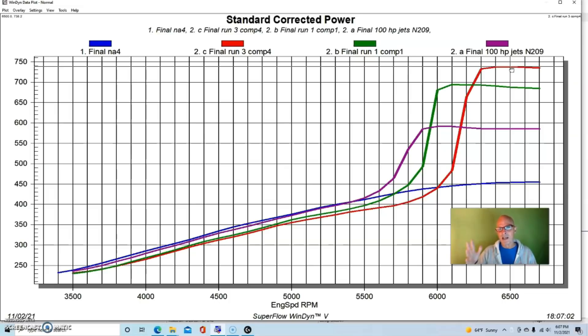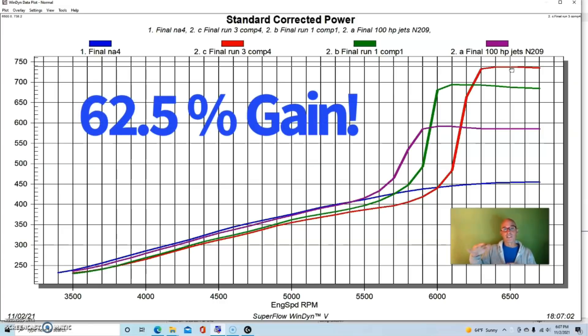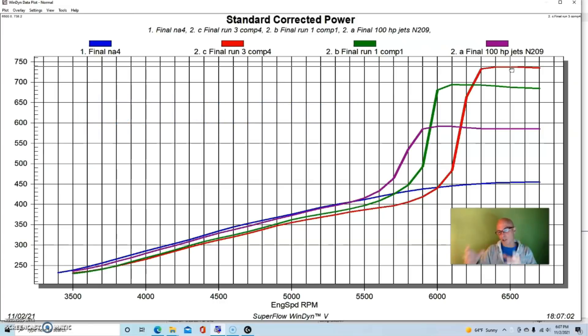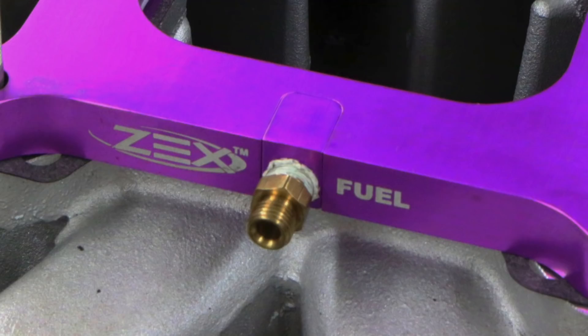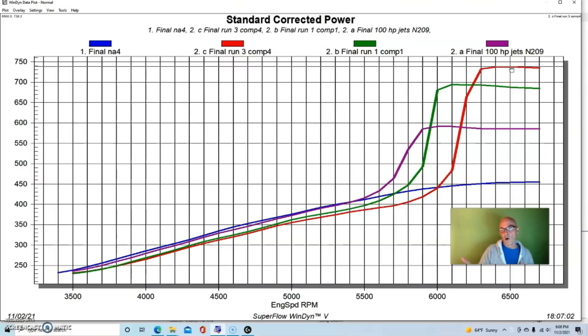Also because we're getting to the flow limit of something in our nitrous system, whether it's the solenoids or the plate or the orifice where we're putting the jetting in, something is limiting the total flow of our system. So it could be the motor, could be something in the nitrous kit itself, but we're getting fewer and fewer gains. So that's our nitrous setup. Now we can take a look at what happened when we started running boost from a blower.